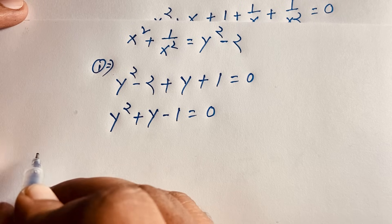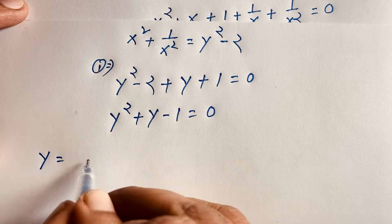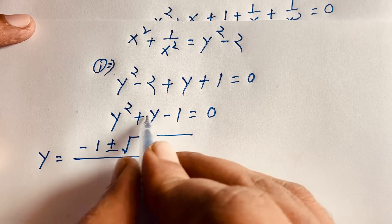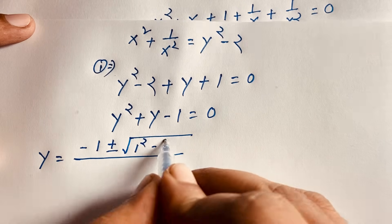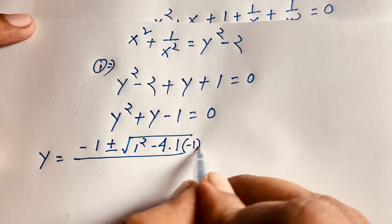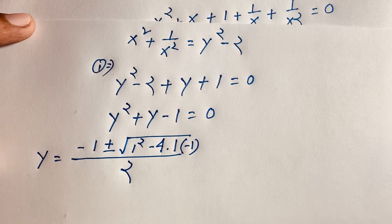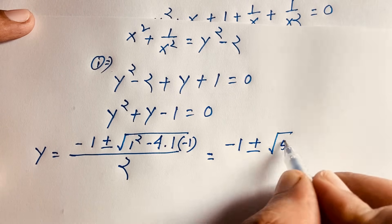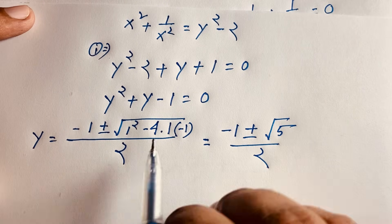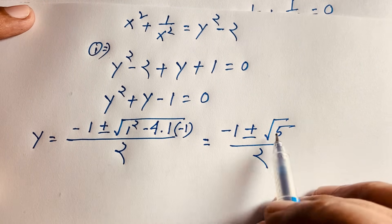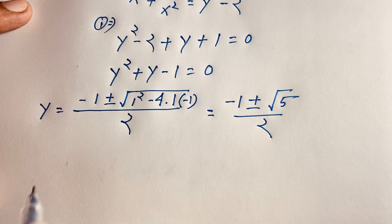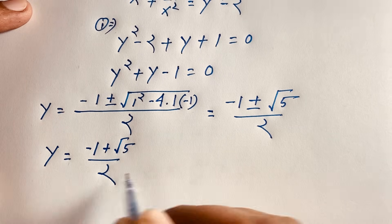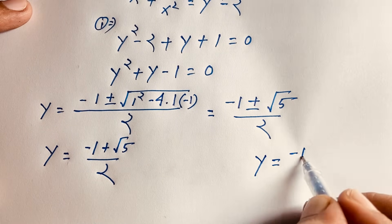Using the quadratic formula, y equals negative b plus or minus square root of b squared minus 4ac over 2a, where b equals 1, a equals 1, and c equals negative 1. So y equals negative 1 plus or minus square root of 1 plus 4, all over 2, giving y equals negative 1 plus or minus square root of 5, over 2.